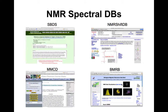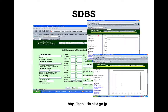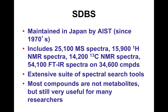The NMR databases — there are a number of them. There's the Spectral Database Standards in Japan, maintained by the AIST, as opposed to the NIST database. It's been around for more than 40 years and now has more than 25,000 spectra for mass spec, tens of thousands of proton and carbon NMR spectra, and FTIR spectra as well. It has lots of search tools.